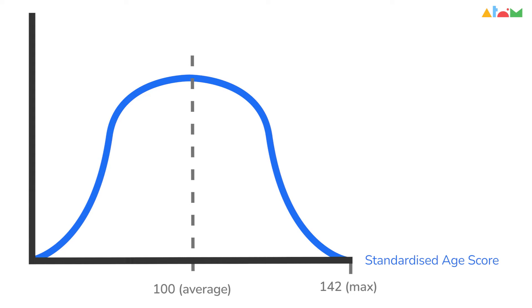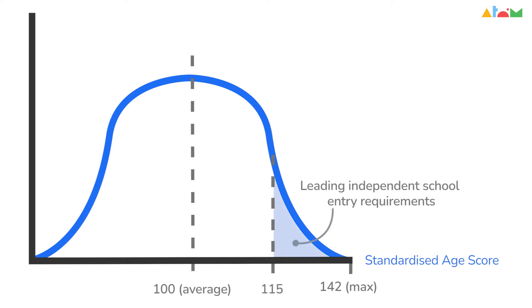If you and your child are aiming for entry into one of the UK's top, most selective schools, we would recommend aiming for a standardised age score of at least 115 in any Atom Learning mock test.